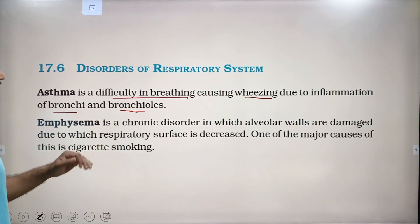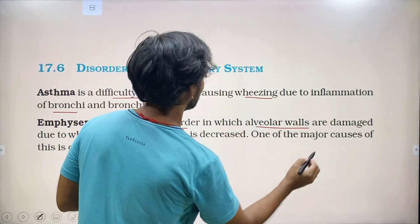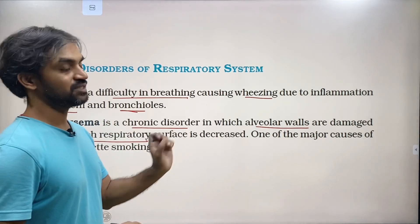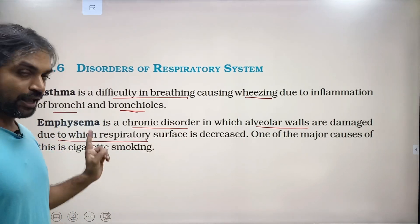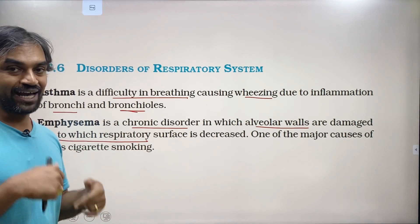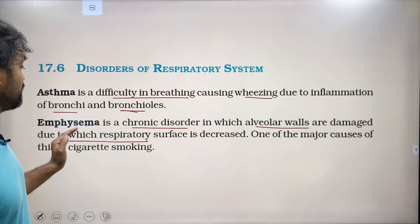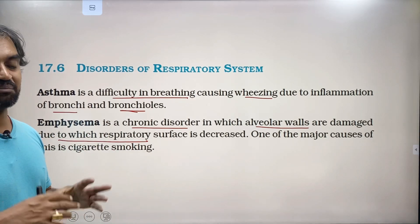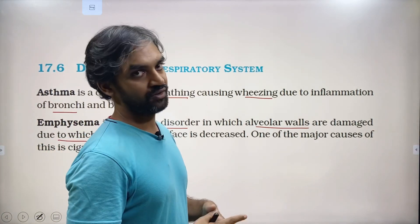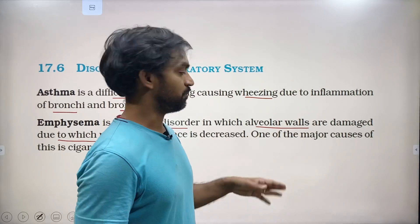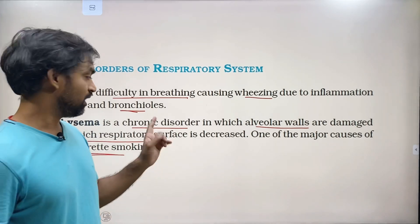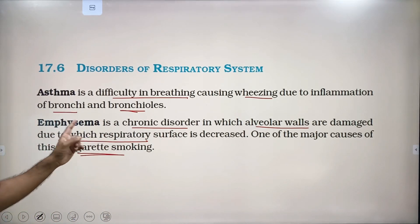Emphysema is a chronic disorder in which alveolar walls are damaged, causing decreased respiratory surface area and impaired exchange of gases. It is a severe, chronic condition. One of the major causes of emphysema is cigarette smoking.